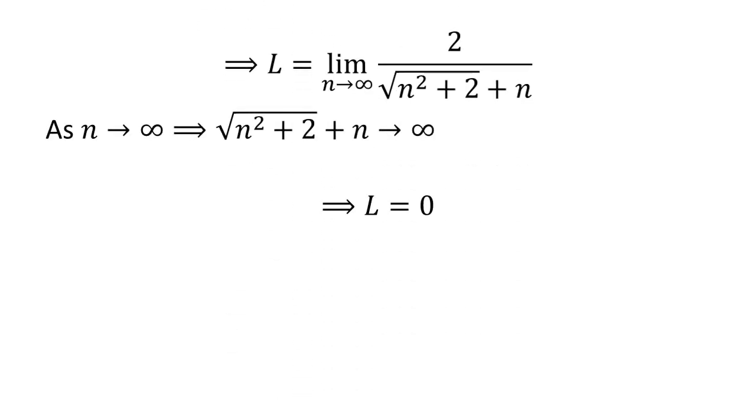We know as n approaches infinity, square root of n squared plus 2 plus n approaches infinity. So the limit L equals 0, as 1 over infinity equals 0.